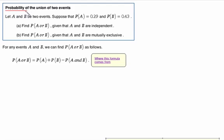Here we'll be talking about the probability of the union of two events. So let's take a look at what that means. First of all, we're going to let A and B be two different events. And if the probability of the first event is 0.29 and the second event is 0.43, we have two little questions to solve.